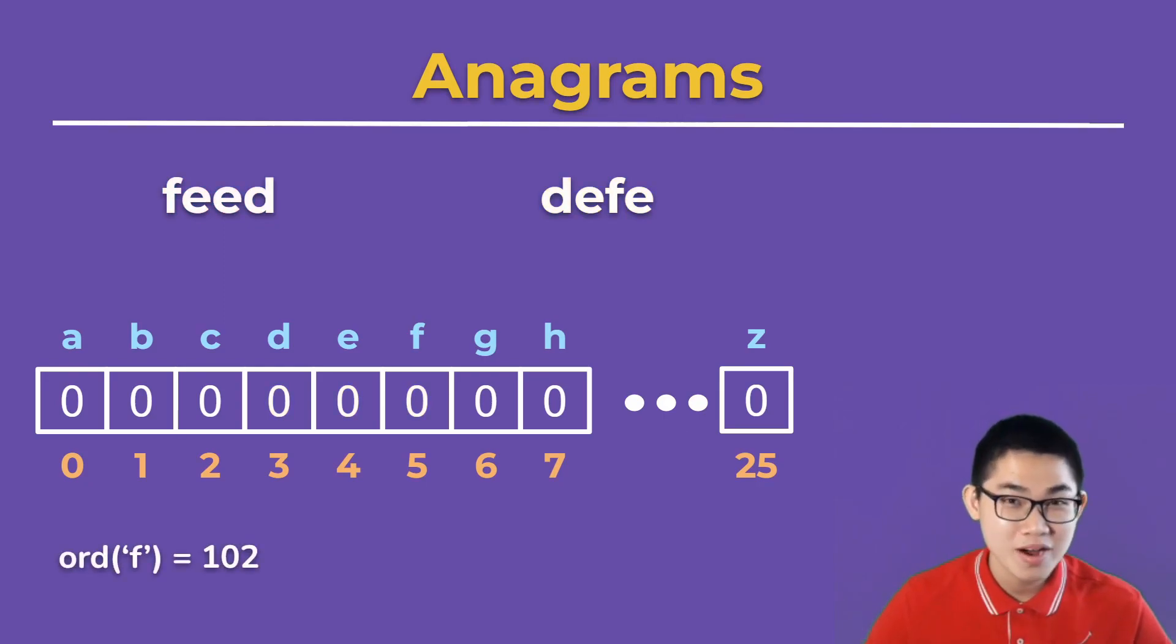So you might be wondering, how do we know that F is at index 5? That's a very good question. Here's a way to determine. We translate F into its unicode. The unicode of F is 102, and we can use the ord function to do that. Then we take this number, minus the unicode of A, which is 97, and then we get 5.